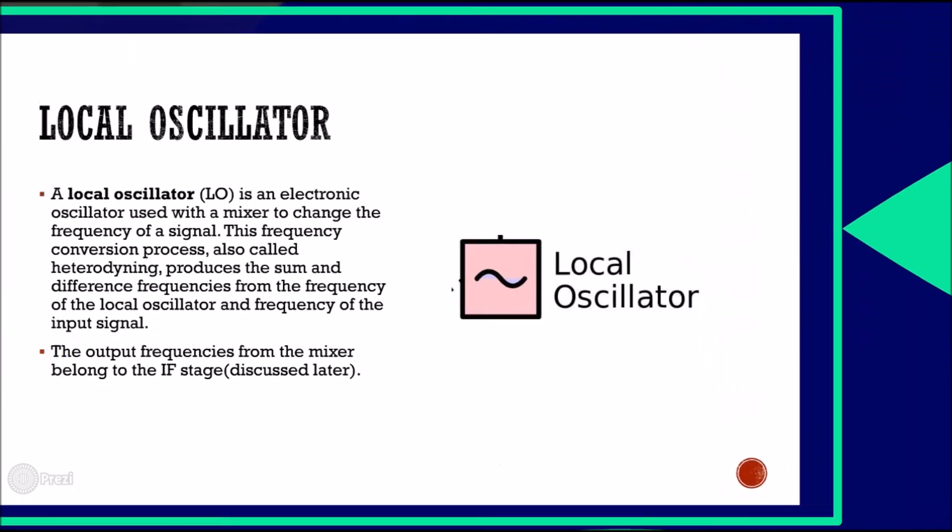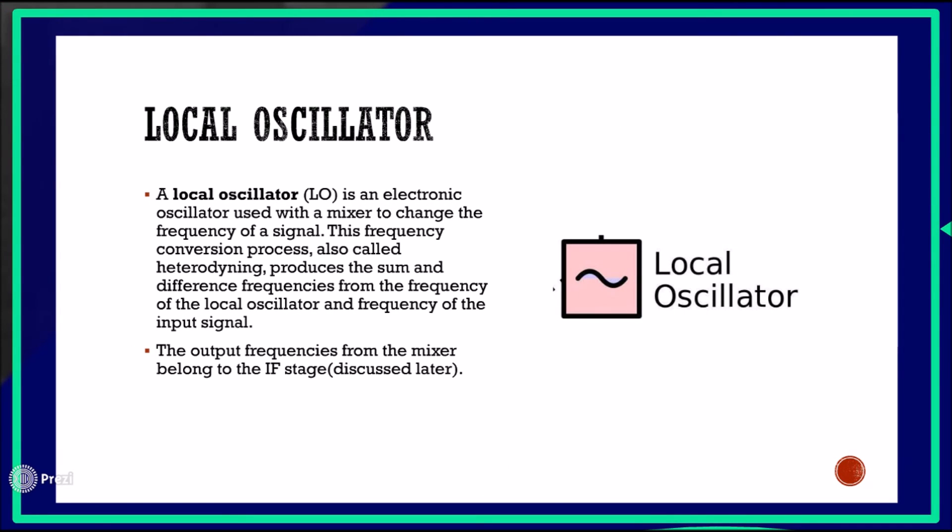Next comes the local oscillator. A local oscillator is an electronic oscillator used with a mixer to change the frequency of a signal. This frequency conversion process, also called heterodyning, produces the sum and difference frequencies from the frequency of the local oscillator and the frequency of the input signal. The output frequencies from the mixer belong to the IF stage.